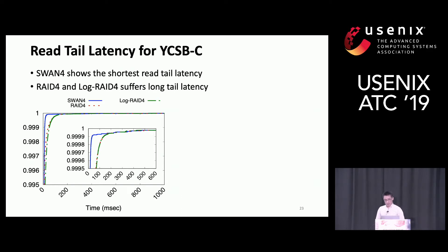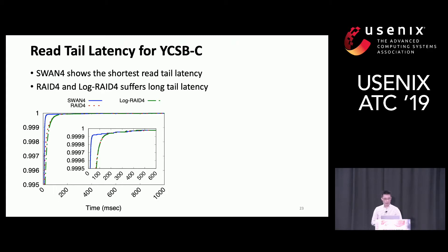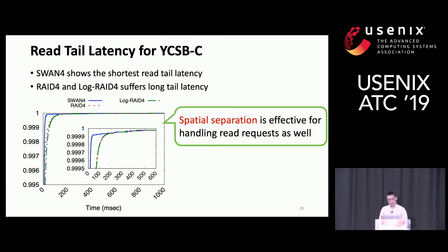Here is the read tail latency for the YCSB benchmark. The x-axis is time and y-axis is latency, specifically tail latency. SWAN shows the shortest read tail latency, while RAID-4 and Log-RAID-4 show longer tail latency. This shows that spatial separation is effective for handling read requests as well.